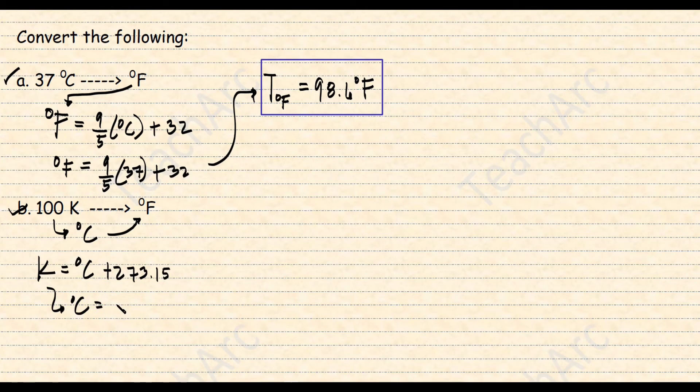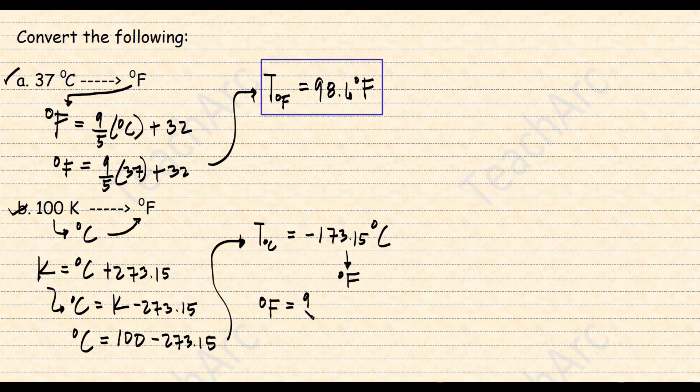Since we are looking for degrees Celsius, we subtract 273.15 from the given degrees Kelvin which is 100. So we get a temperature of negative 173.15 in terms of degrees Celsius. Converting that to degrees Fahrenheit, we will get negative 279.67 degrees Fahrenheit.